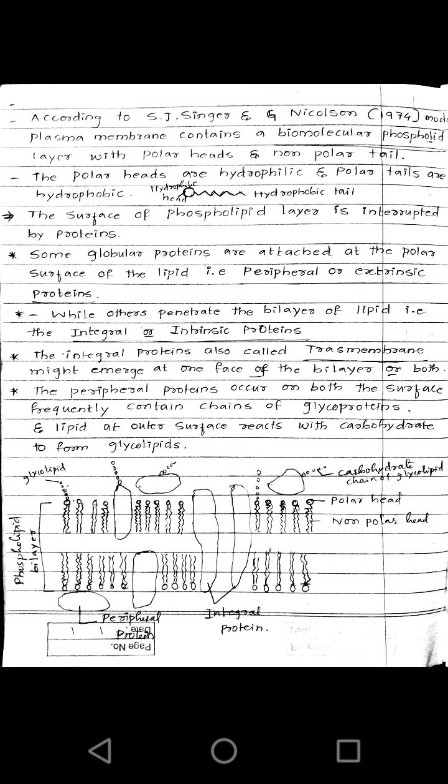Why is the name 'fluid mosaic' given to this plasma membrane? Because this plasma membrane or cell membrane is distributed with proteins, it gives a mosaic appearance. That is why the name fluid mosaic is given to the plasma membrane.